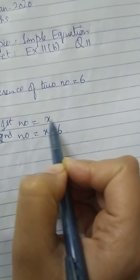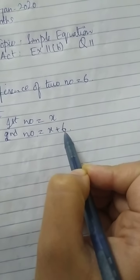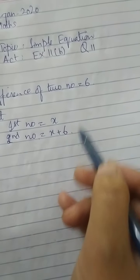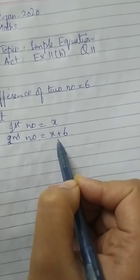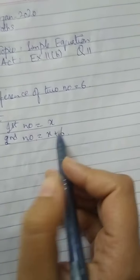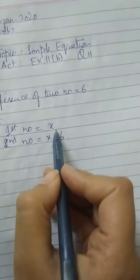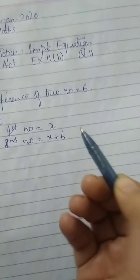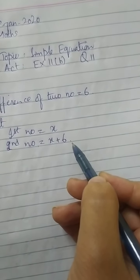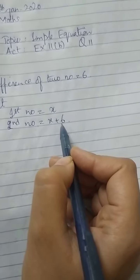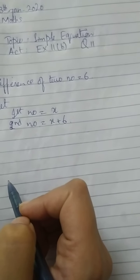Agar first number 6 hai, to doosra number 6 plus 6 = 12 hoga. To dono numbers mein 6 ka fark hai. First number X hai, second number hamare paas 6 add karne ke baad aayega. Ek number X hai, to doosra number X+6 hai. Agar ek number 3 hai, to 3 mein 6 plus karenge — dono numbers ke andar 6 ka fark hai, to 6 plus karke hamare paas doosra number aa jaayega.